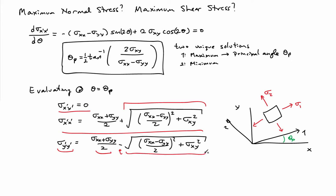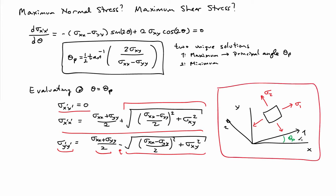If I draw the stress in the principal coordinate frame on a stress element, it looks as shown here. It's an element rotated at angle theta_p, with a normal stress we usually call sigma_1 — that's the maximum value — and the second principal stress sigma_2, which is the minimum value. So the max and min principal stresses appear in a coordinate frame oriented at theta_p, and we often call these axes 1 and 2. By convention, sigma_1 is taken to be larger than sigma_2.